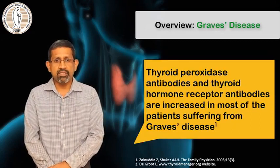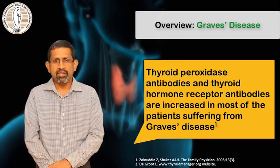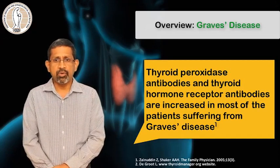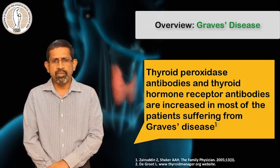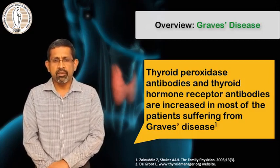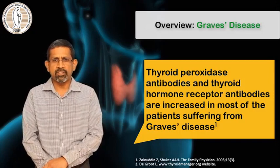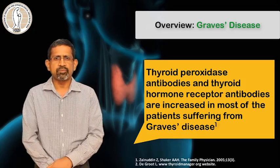Presence of thyroid peroxidase antibodies and thyroid receptor antibodies are increased in most patients with Graves disease, which makes diagnosis easier in some cases of confusing thyroid function reports.